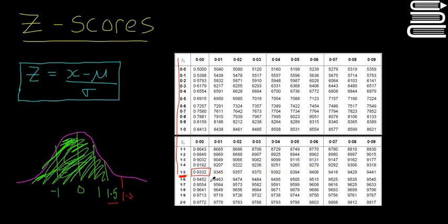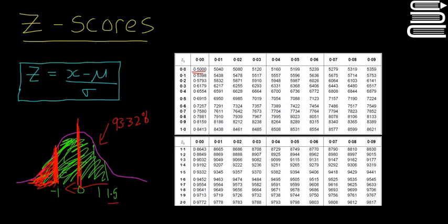So what does that answer mean? Our answer is 0.9332, which means the shaded area is 93.32%. The standard normal table only reads what's below a certain point — to the left — and it only starts at 0.5, meaning it starts right in the middle. The reason is that it's symmetrical, so there are some ways around finding values like below minus 1, and we'll look at that in the next few videos.